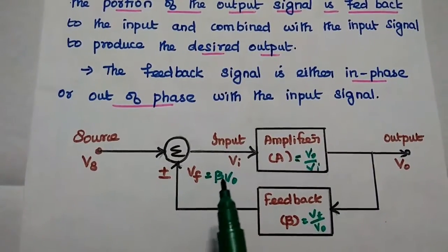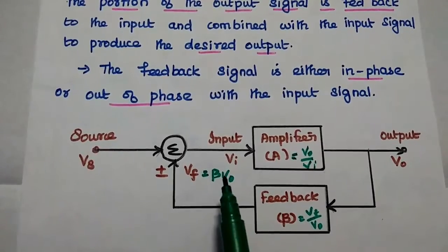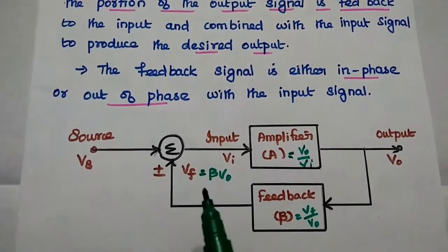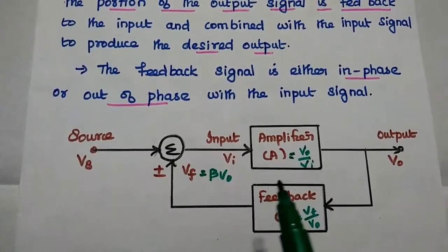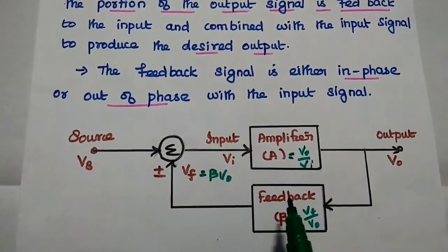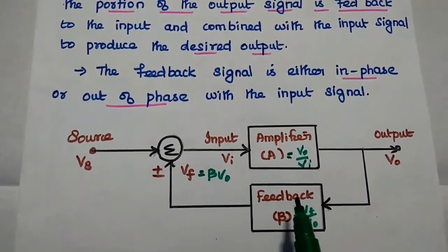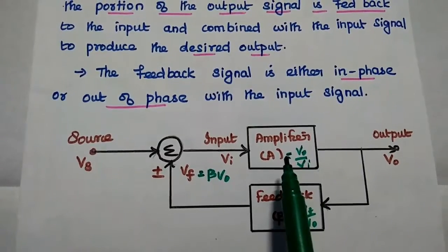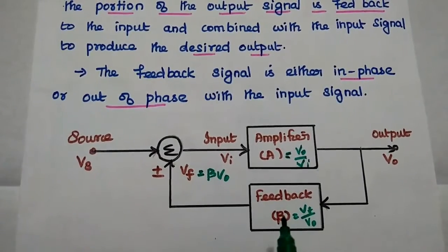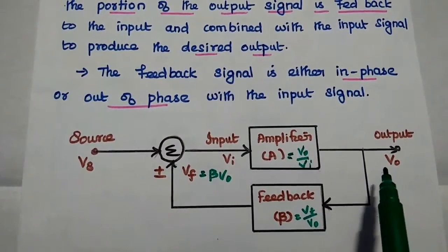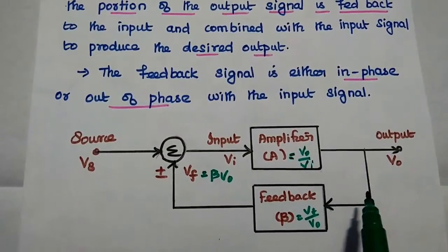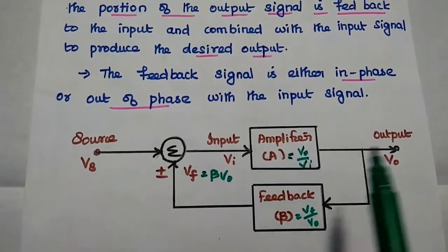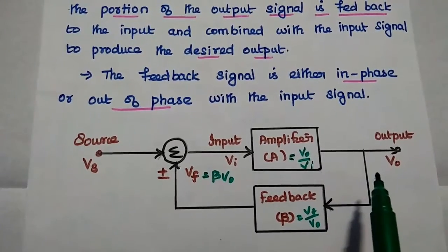Based on that, we can classify the feedback system into two types: positive feedback and negative feedback. This is the basic structure of a feedback system. It has two important circuits: an amplifier circuit and a feedback circuit. The portion of the output signal is fed back to the input side to get the desired output.